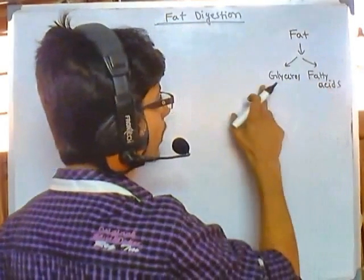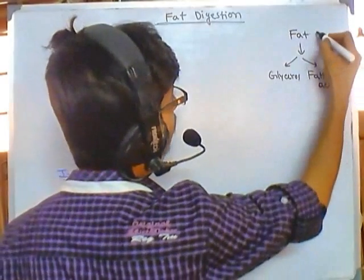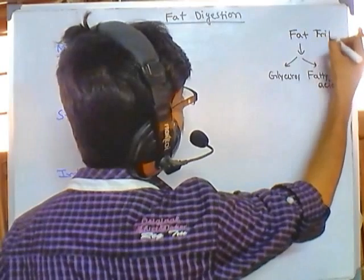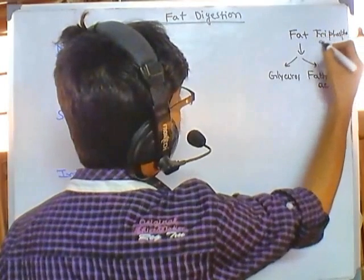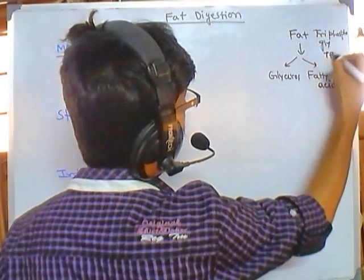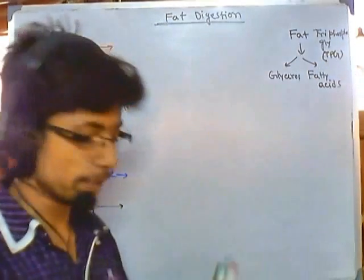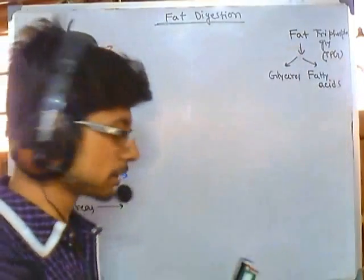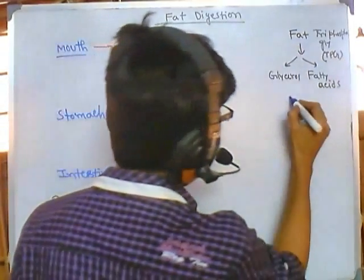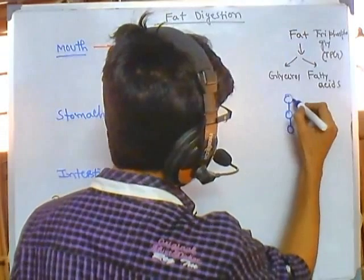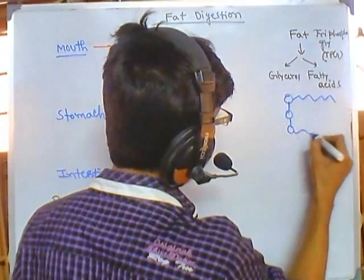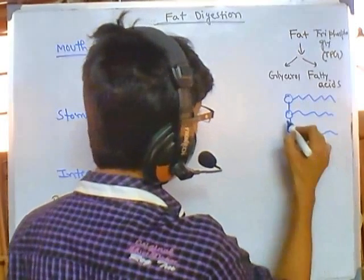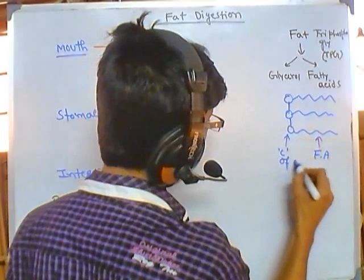The fat made up of glycerol and fatty acids is called triphosphoglycerate, or TPG molecules. In our dietary fat, we have many of these triphosphoglycerate molecules, which typically have a three-carbon glycerol chain with fatty acids attached throughout.